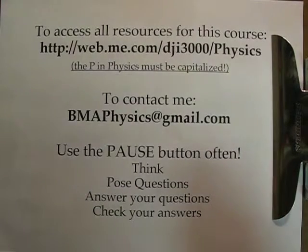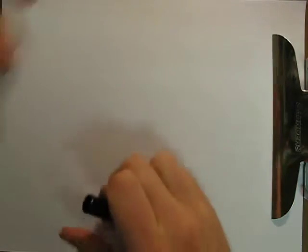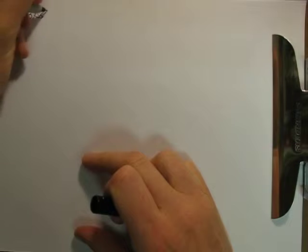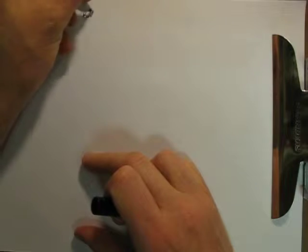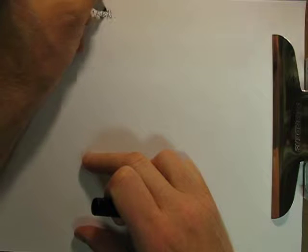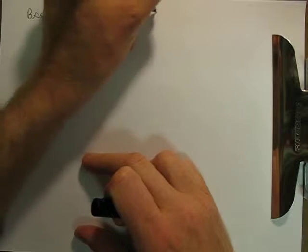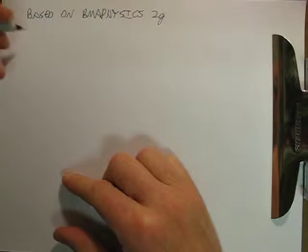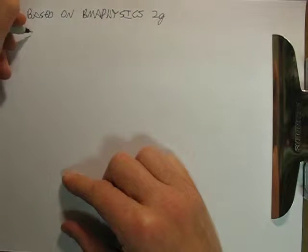Okay, so in this video we are going to analyze the motion that you saw in the video BMA Physics 2G. This is based on BMA Physics 2G, and that is a tennis ball being dropped from a balcony by one of my assistants. Once again, you set it up the exact same way.